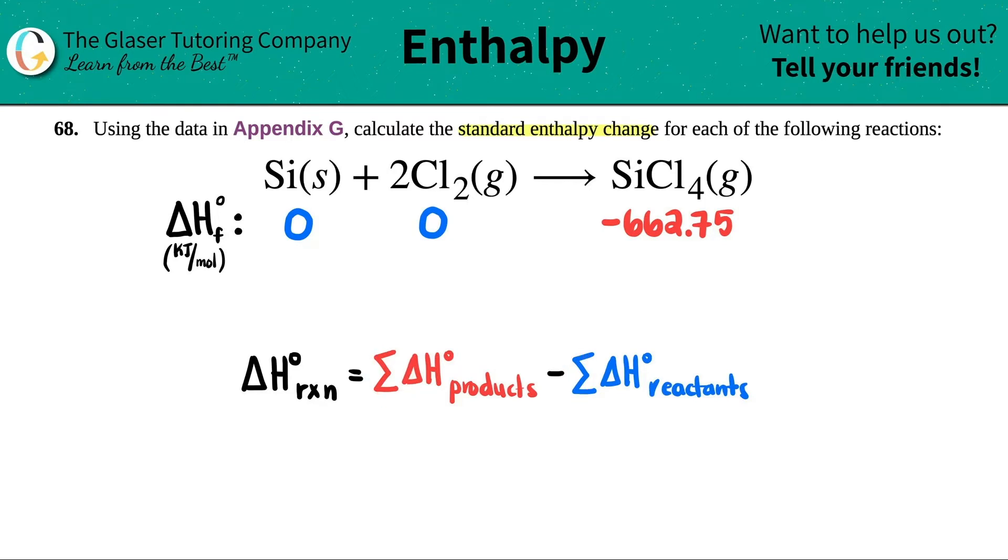So before we do that, we just have to get one number for the reactant side and one number for the product side. Now what we have to do before we plug it into this formula, let's just multiply each one of these numbers that I found on Appendix G by how many you have in your balanced equation.